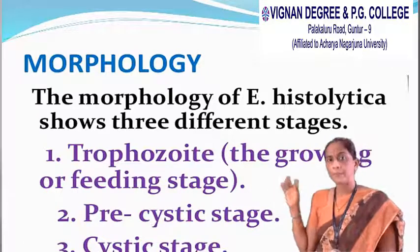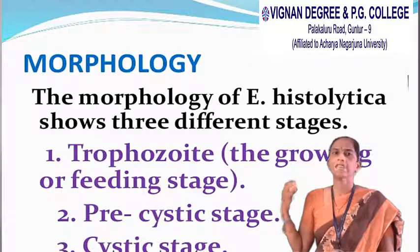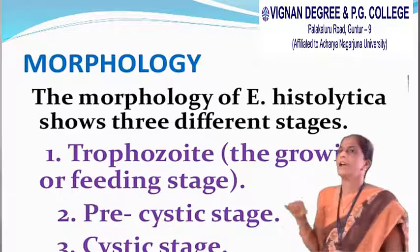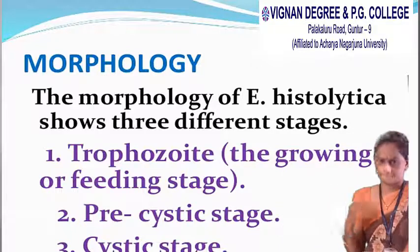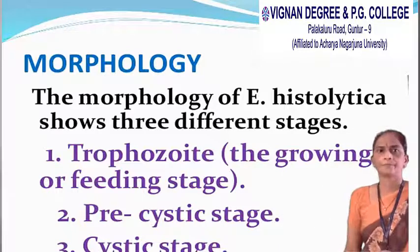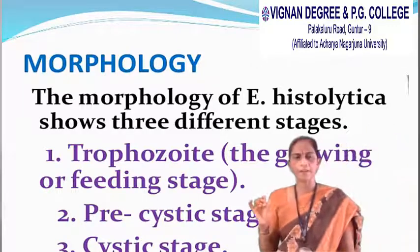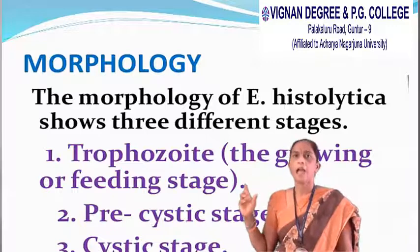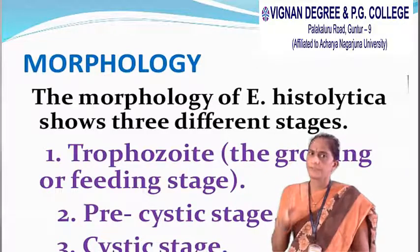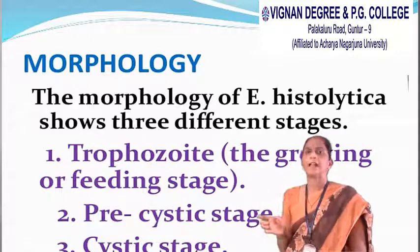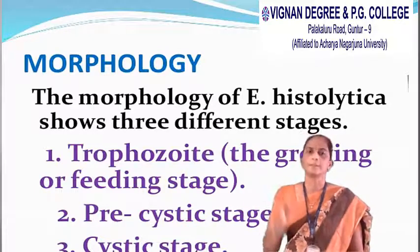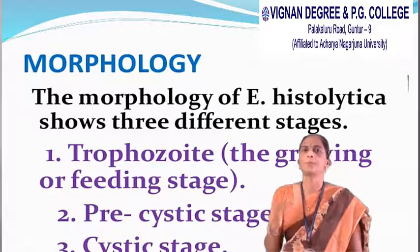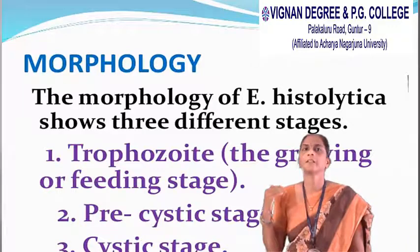Coming to the habitat, Entamoeba histolytica mainly lives in the intestine of humans. It is a free-living protozoa. About 90% of infections are asymptomatic — patients don't show any symptoms even though they are suffering from the disease. Only 10% of people will show symptoms.